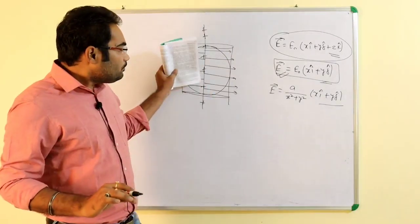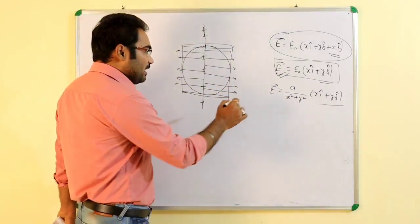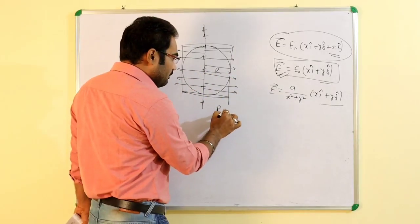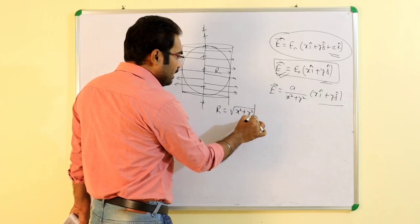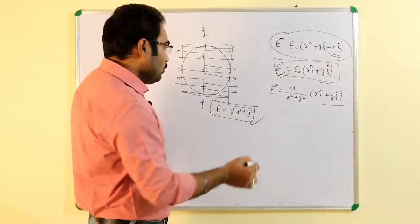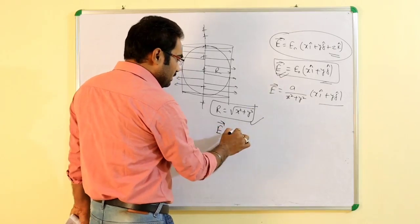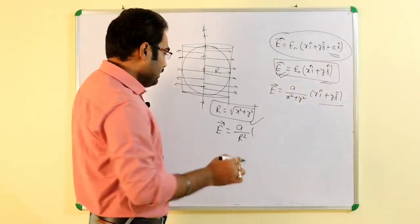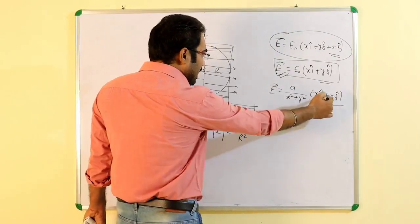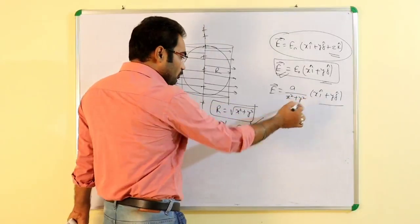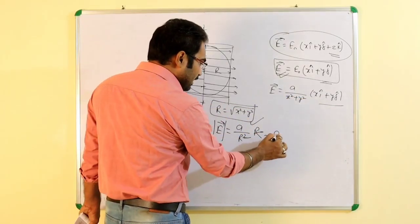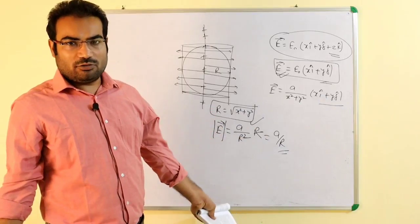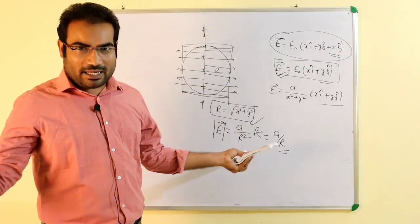Electric field का equation है A/(x²+y²) into (x i-cap + y j-cap)। जब cylinder मान लिया तो x²+y² = r² होगा, जहाँ r = √(x²+y²) cylinder का radius है। तो electric field = A/r² into (x i-cap + y j-cap)। Magnitude में लिखें तो x i-cap + y j-cap का magnitude = r, तो r cancel होकर electric field का magnitude = A/r आ जाता है।